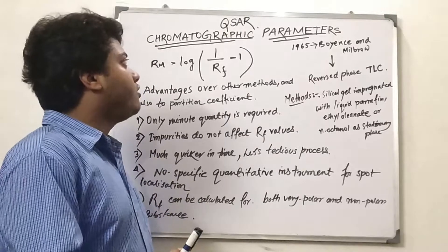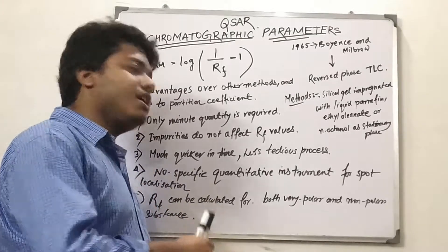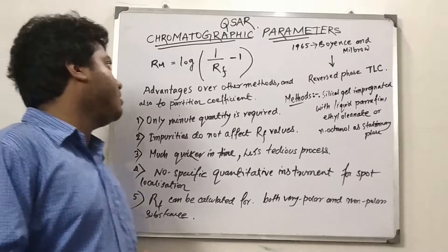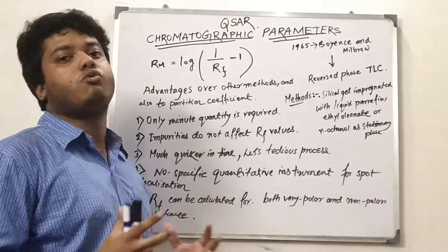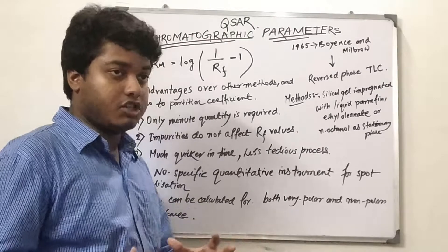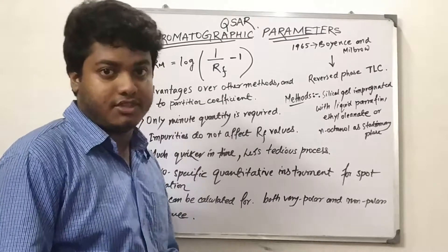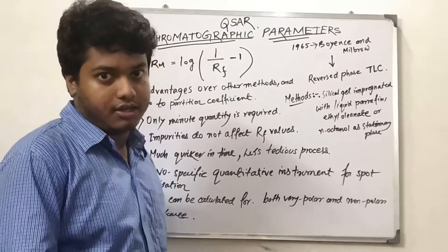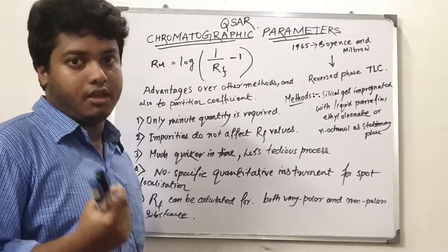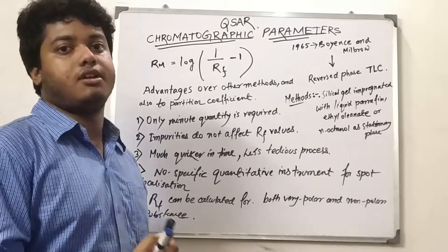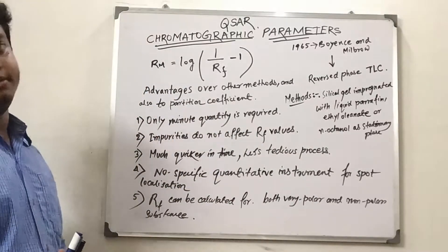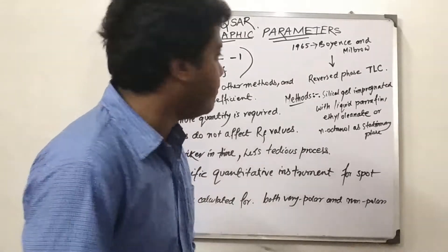The main reason is that chromatographic parameters have a number of advantages over other methods and the partition coefficient itself. One key advantage is that in chromatographic determination, we need only a minimum quantity of the analyte. In the traditional method using an octanol-water mixture to determine log P, a very large amount of analyte is required, which is not possible for potent drugs that are present in very minor quantities.